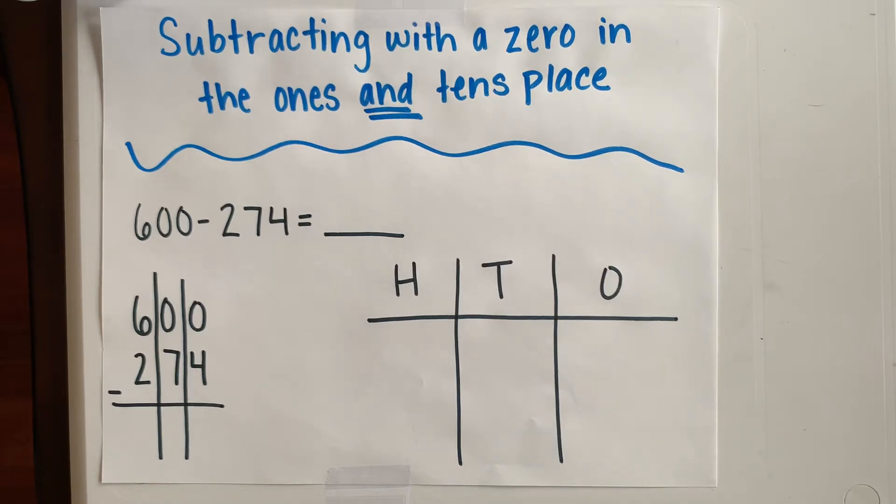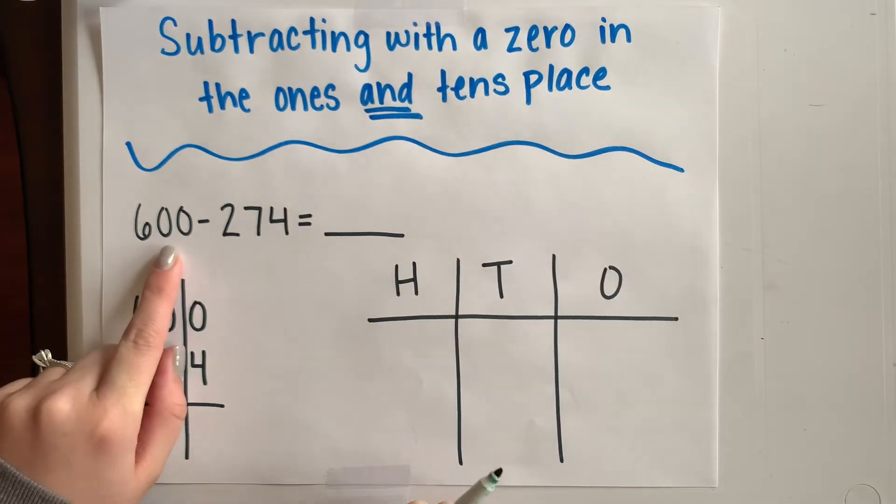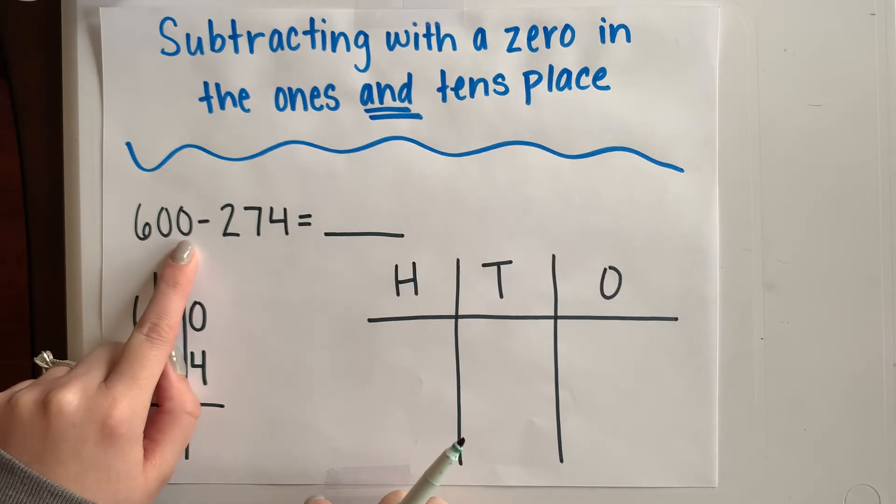Alright guys, so now we're going to talk about one last tricky subtraction problem that you guys might be solving this week. That's when we are subtracting from a number that has a zero in the ones and the tens place, so a number like 600, where we have a zero in the ones and a zero in the tens.